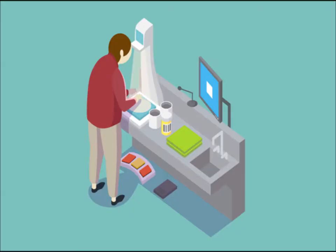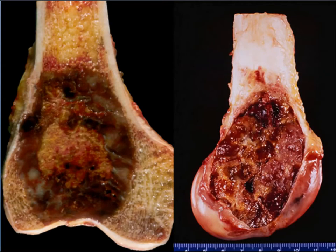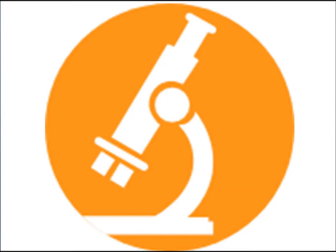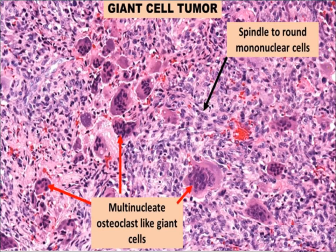On gross inspection, the naked eye examination of the tumor showed an epiphyseal, eccentric, hemorrhagic, expansile region with areas of cystic change. Microscopically, the biopsy showed multinucleated giant cells, spindle to round mononuclear cells, and areas of hemorrhage and necrosis.